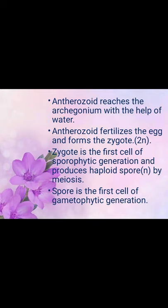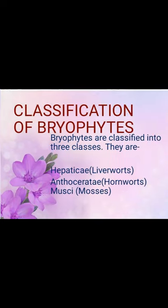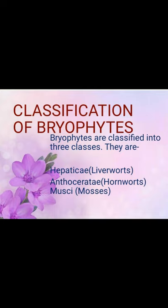The spore is the first cell of the gametophytic generation. To summarize: the zygote is the first cell of the sporophytic generation, and the spore is the first cell of the gametophytic generation. Now, the classification of bryophytes — bryophytes are classified into three classes: Hepaticae (liverworts), Anthocerotae (hornworts), and Musci (mosses).